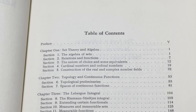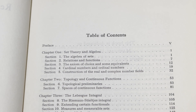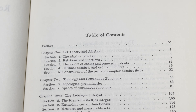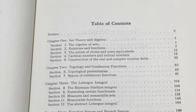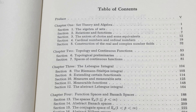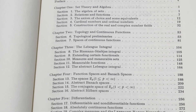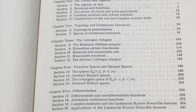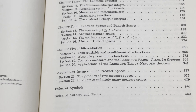It starts with sets and does a really good job of reviewing a bunch of stuff. It's a very, very dense book — it covers a lot of material quickly and correctly. Chapter one is on set theory and algebra, two is on topology and continuous functions, three is on the Lebesgue integral, four is on function spaces and Banach spaces, five is on differentiation, and six is on integration on product spaces.